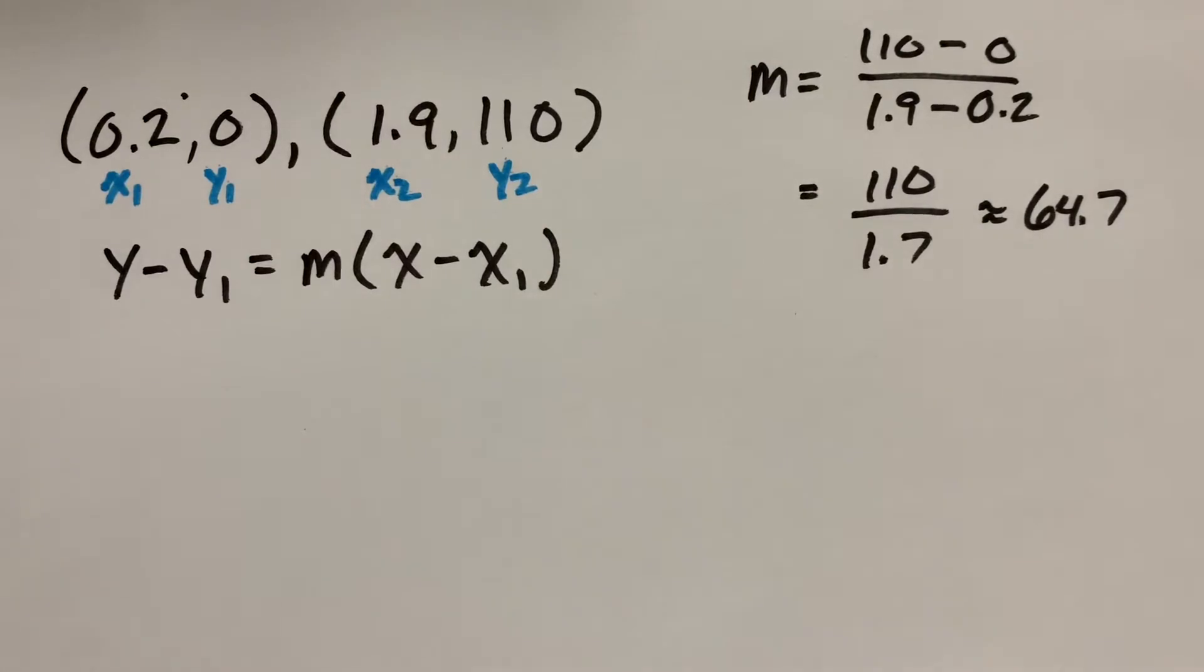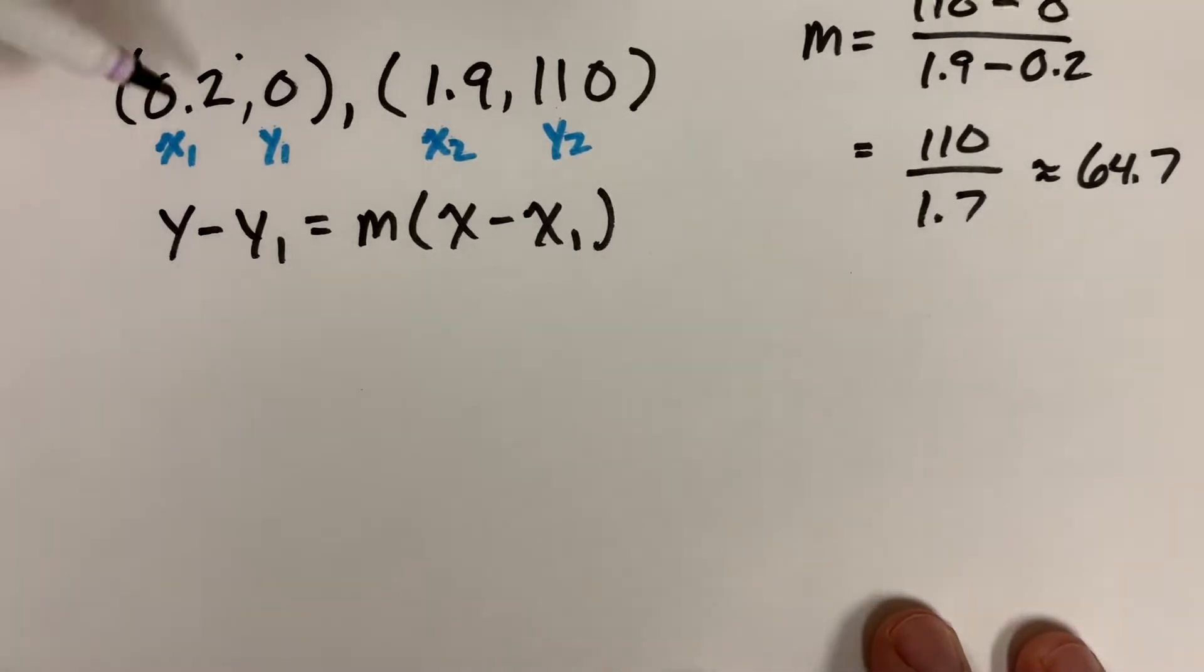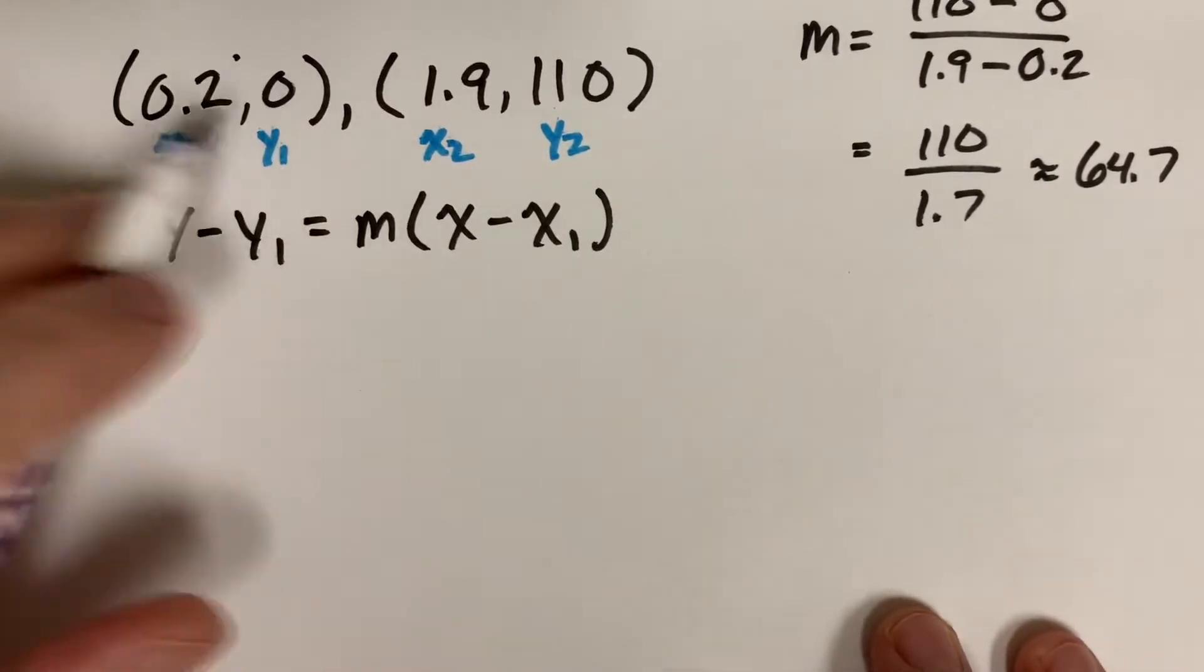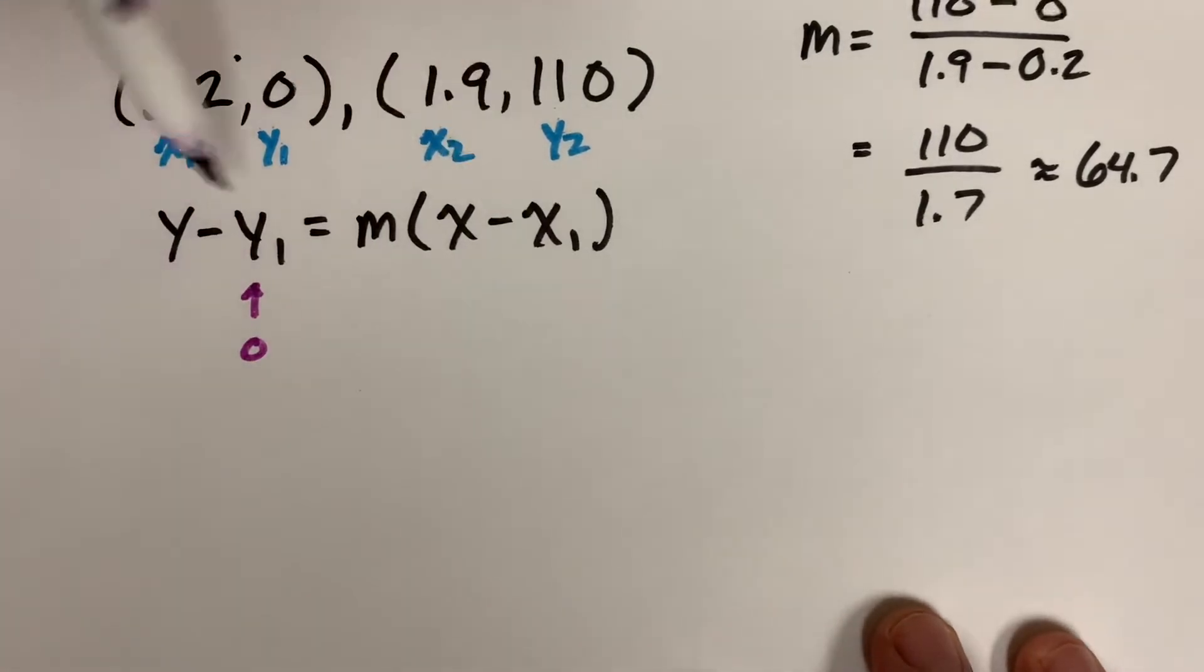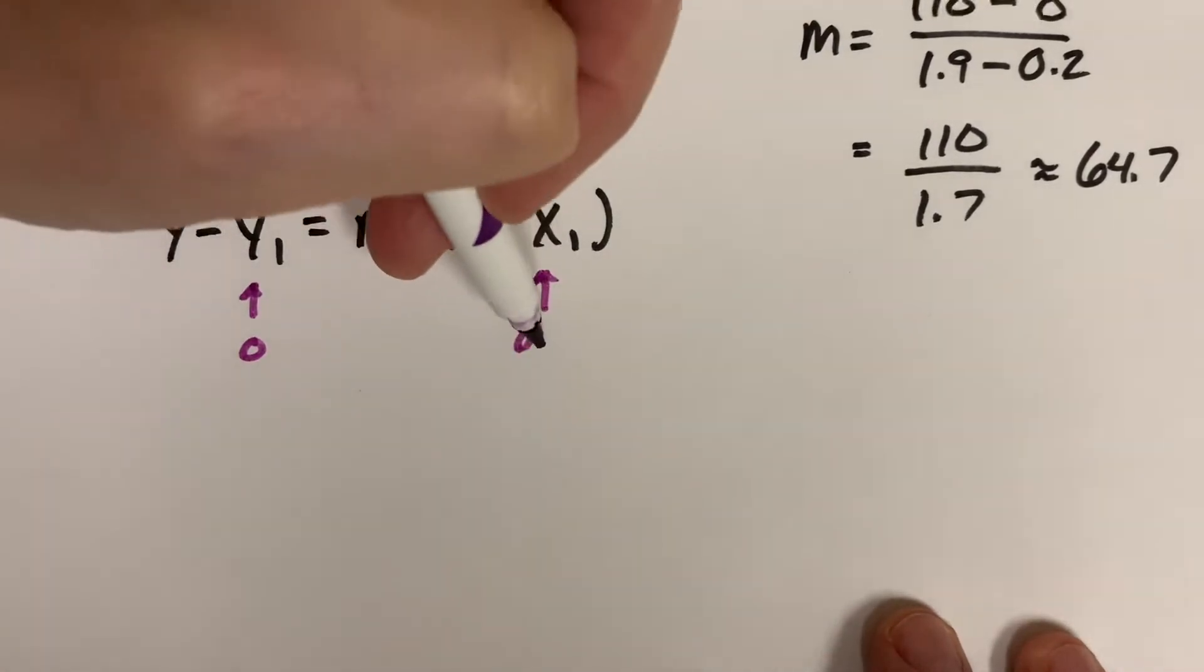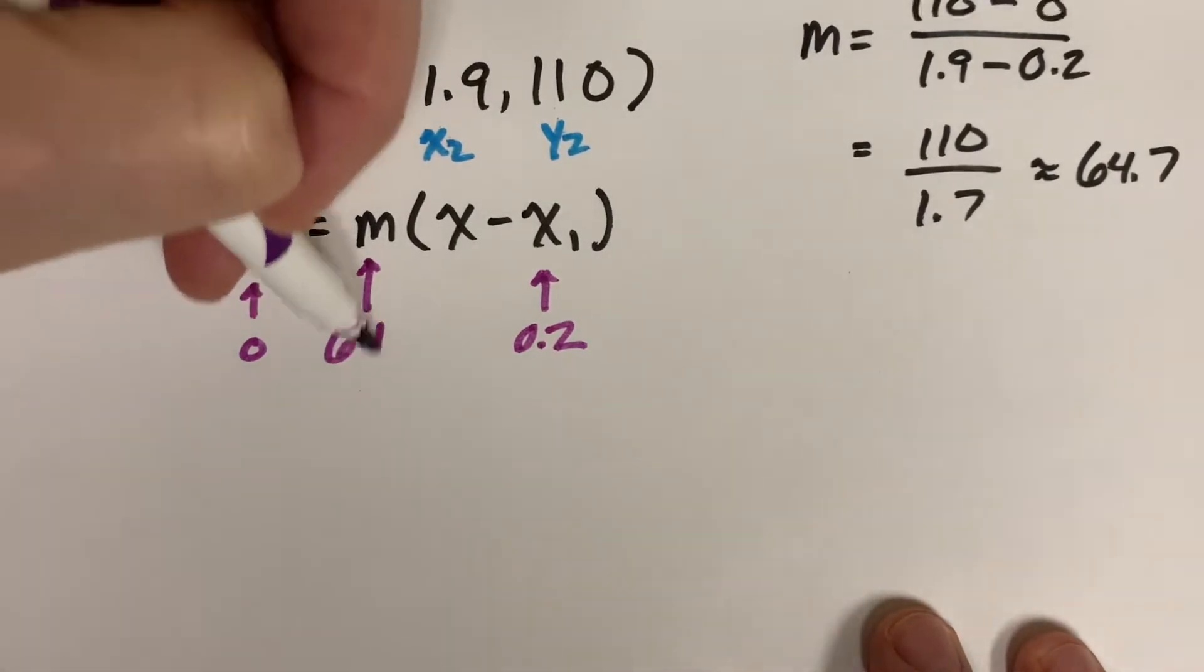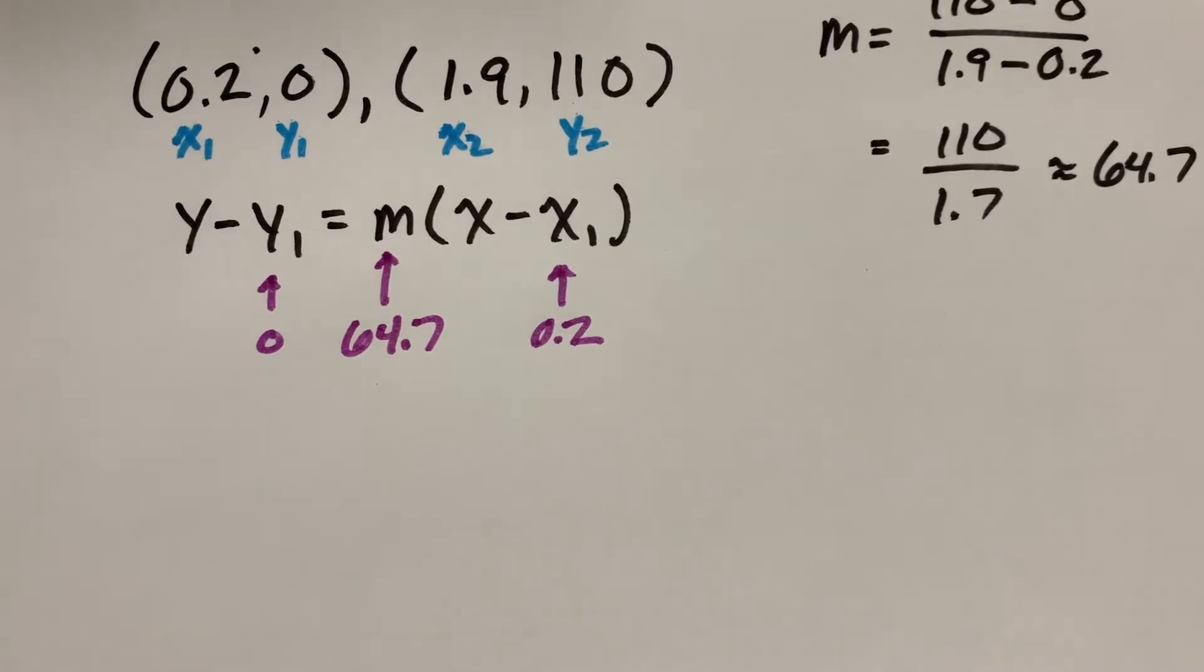Now I'm going to plug some numbers in. I'm going to use x1 and y1. I might as well use these because y1 is already 0, so y1 is 0, x1 is 0.2, and my slope turned out to be 64.7. So I'm going to plug those three numbers in and then solve for y. This is how you find the equation of a line in slope intercept form.